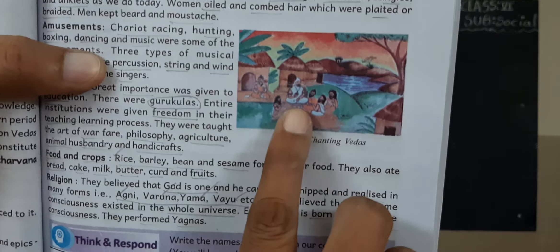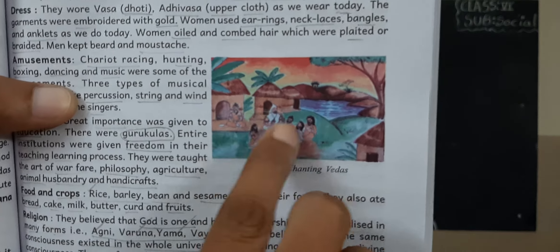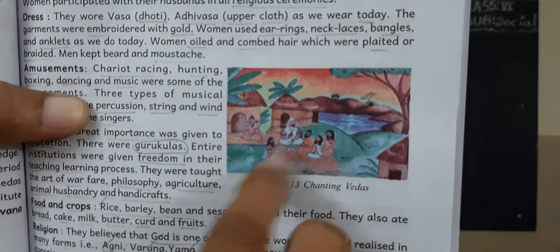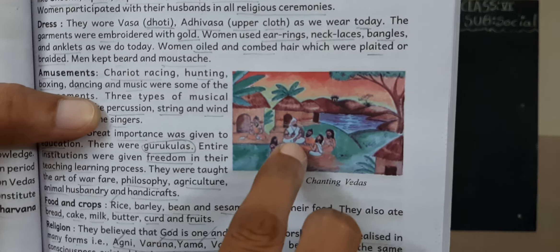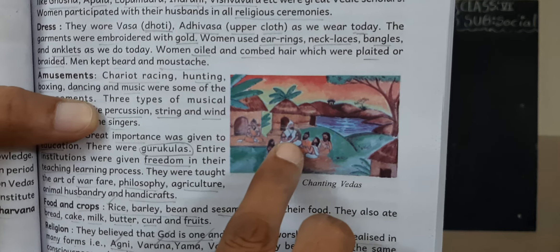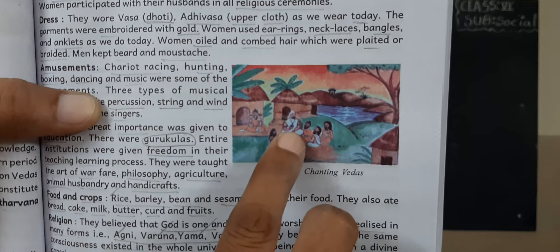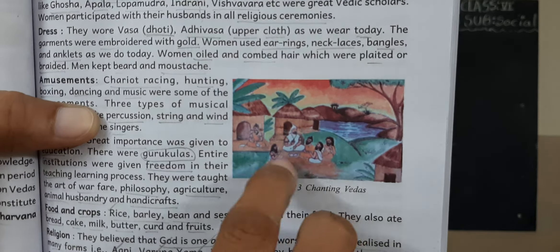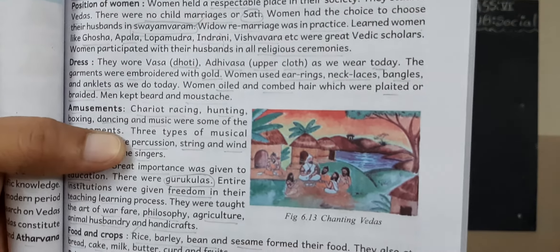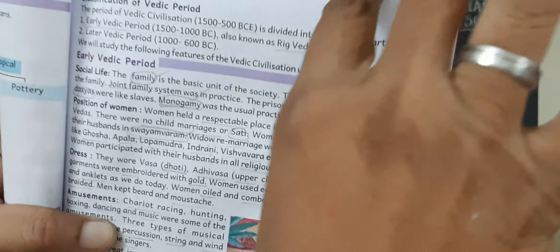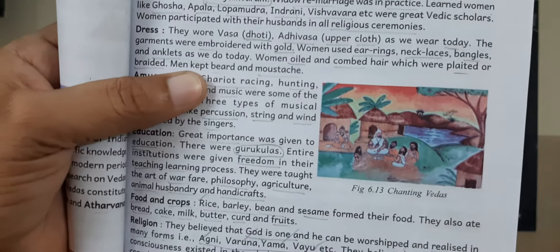Now look at this picture — the Vedas picture. The disciples sat around their Guru at Gurukulas. Okay children, thank you.